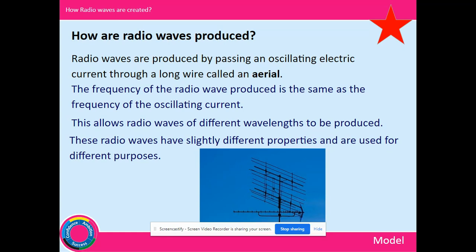How are radio waves produced? Radio waves are produced by passing an oscillating electrical current through a long wire called an aerial. You have an electrical current and change its direction backwards and forwards, which produces an electromagnetic field and generates radio waves. The frequency of the radio waves produced is the same as the frequency of the oscillating current — so a 50 Hz current produces a 50 Hz radio wave. This allows radio waves of different wavelengths to be produced, used for different purposes such as FM radio, long wave, and medium wave.